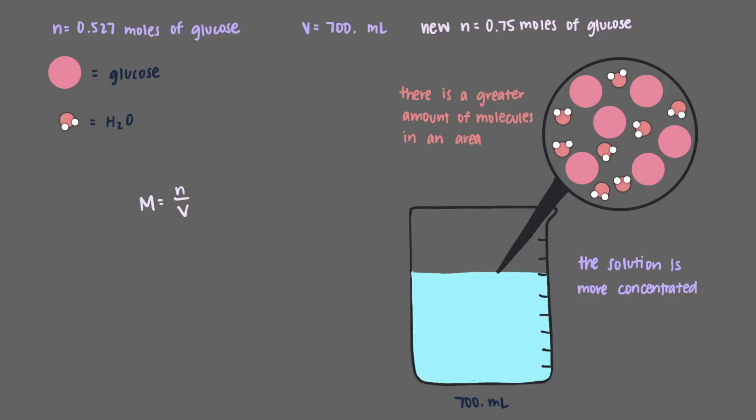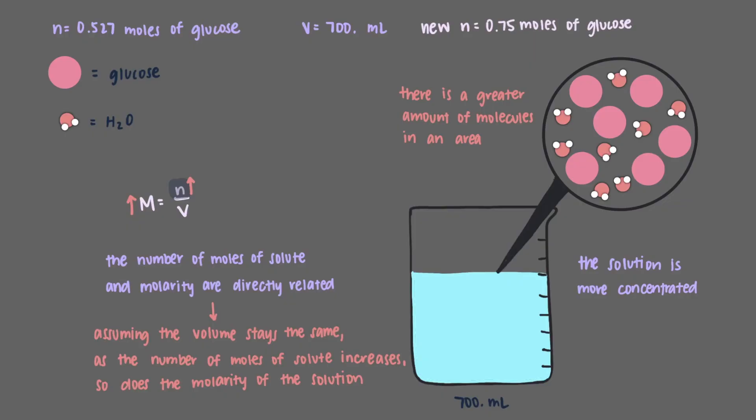Once again, let's look at our equation for molarity. The only factor that changes is the number of moles. The amount of volume in the solution stays the same. This causes the molarity to increase. So we see that the number of moles of solute and molarity are directly related. Assuming the volume stays the same, as the number of moles of solute increases, so does the molarity of the solution.